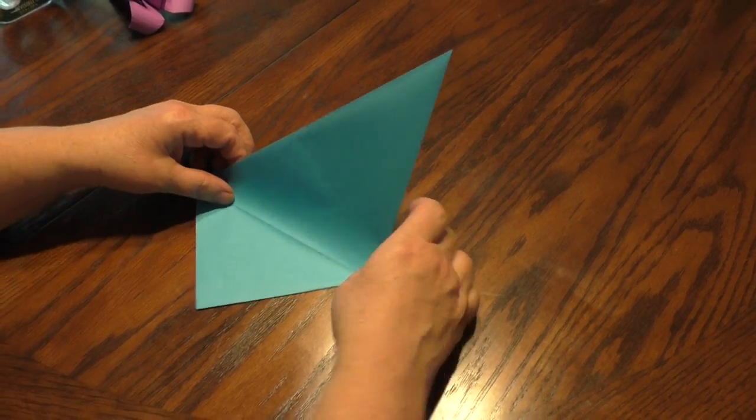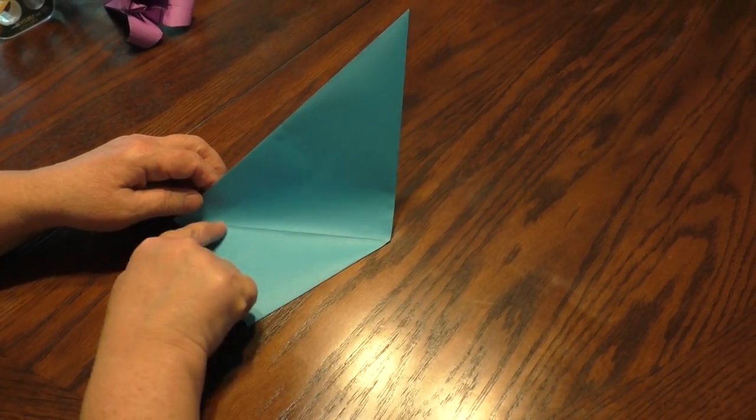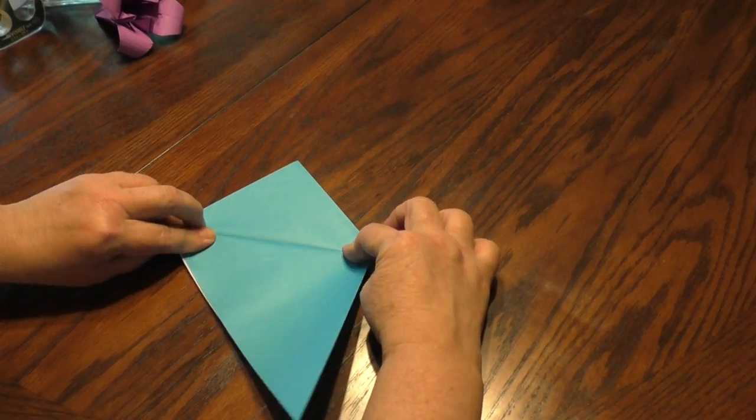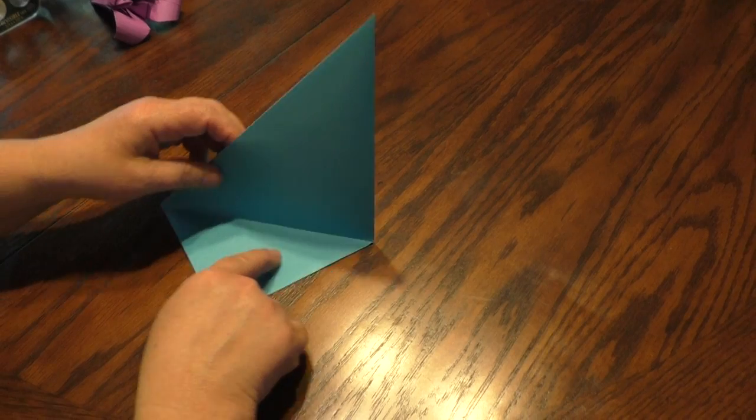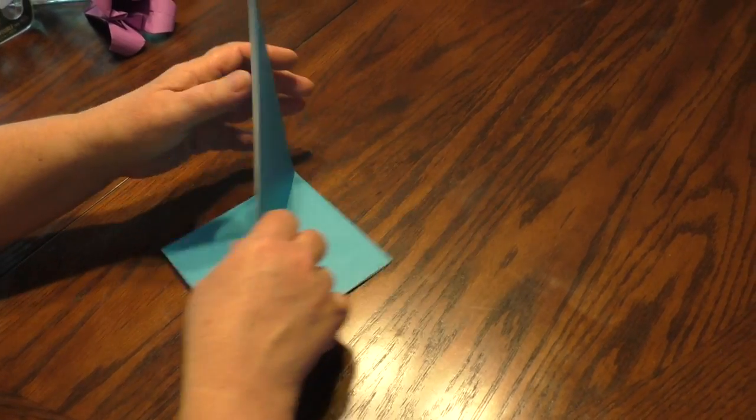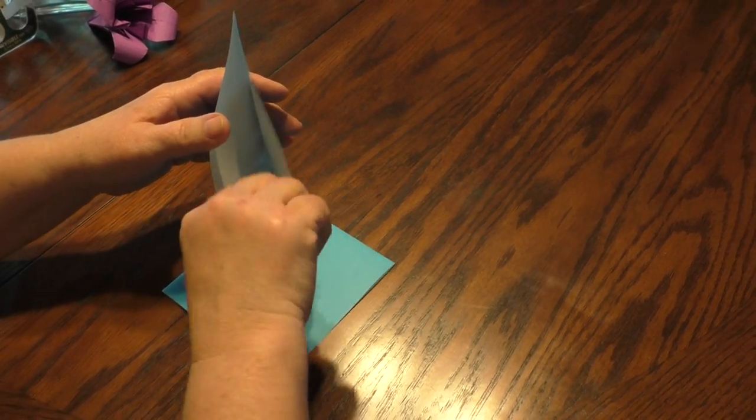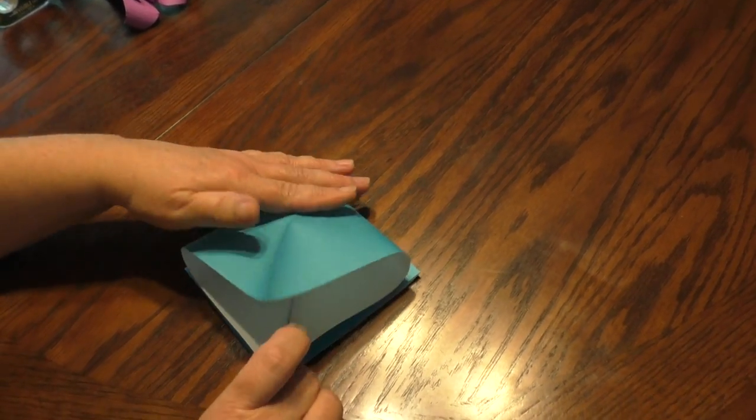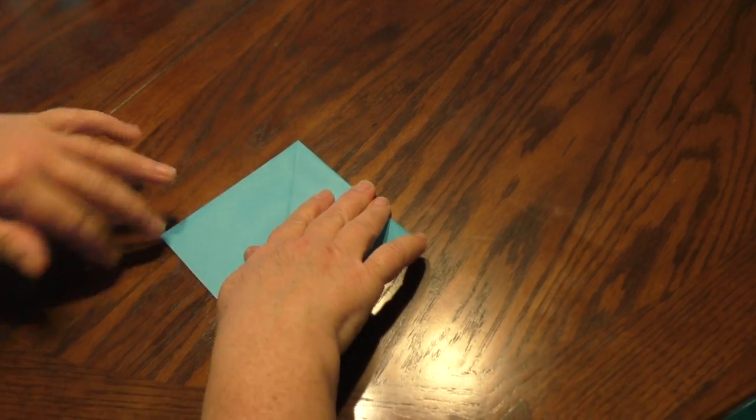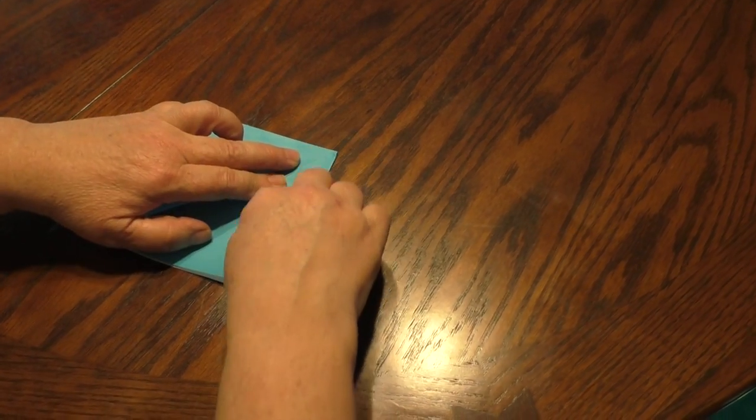Now fold this over. Do you see that crease fold right there? You bend it. It's already folded so it's a pre-fold. So look, it looks like a little sailboat. Now you put your finger in the sail and squash it down and you have a bird base.